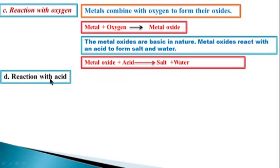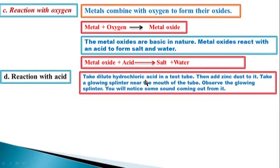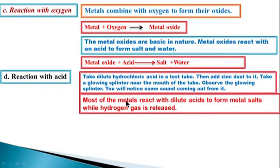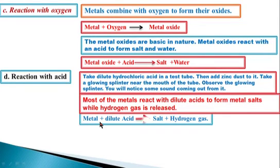Reaction with acid: take dilute hydrochloric acid in a test tube, then add zinc dust to it. Take a glowing splinter near the mouth of the tube and observe it — you will notice a popping sound coming from it. Most metals react with dilute acid to form a metal salt while hydrogen gas is released. The equation is: metal + dilute acid → salt + hydrogen gas.